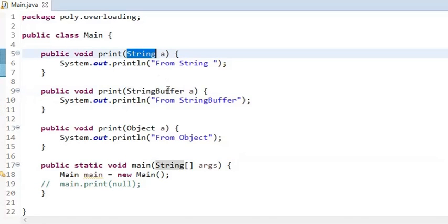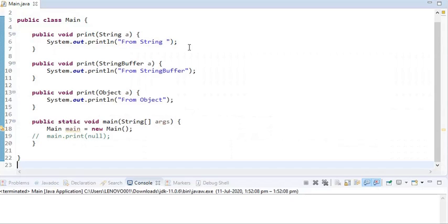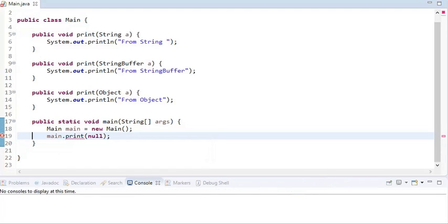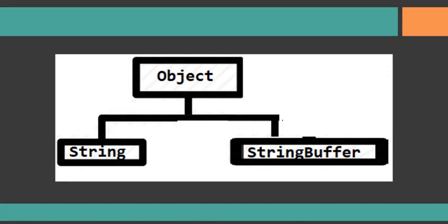Between Object and String, String is more specific. Between Object and StringBuffer, StringBuffer is more specific. But what about String vs StringBuffer — who will accept null? This results in an error: an unresolved compilation problem — ambiguity between String and StringBuffer. The reason is that String and StringBuffer both lie at the same level under Object. When two or more methods can accept an argument at the same level, the result is ambiguity.